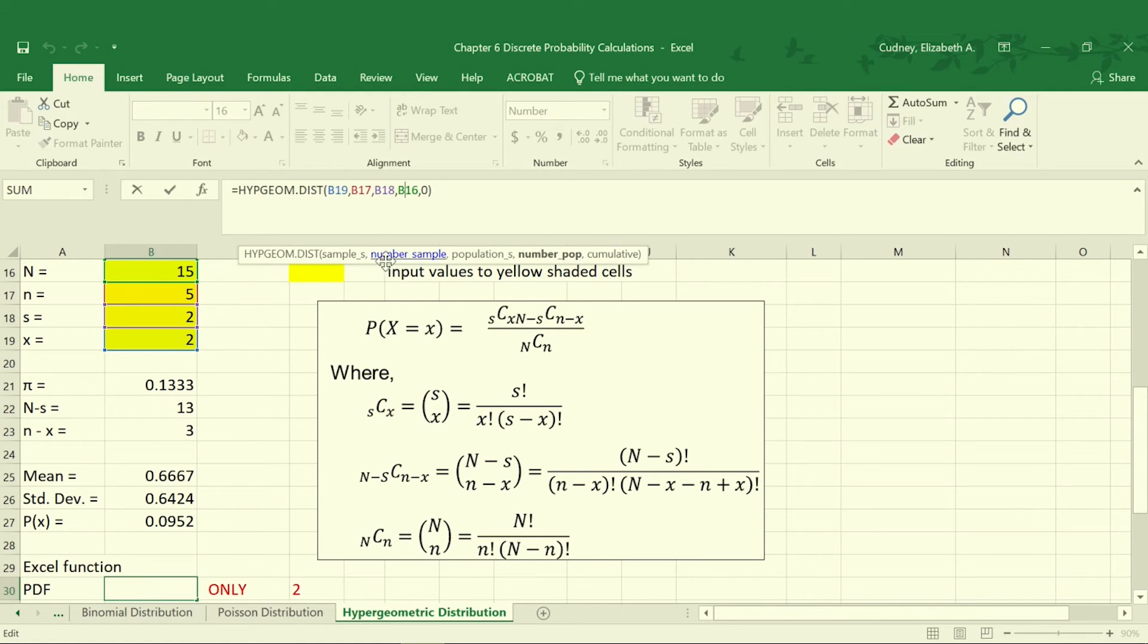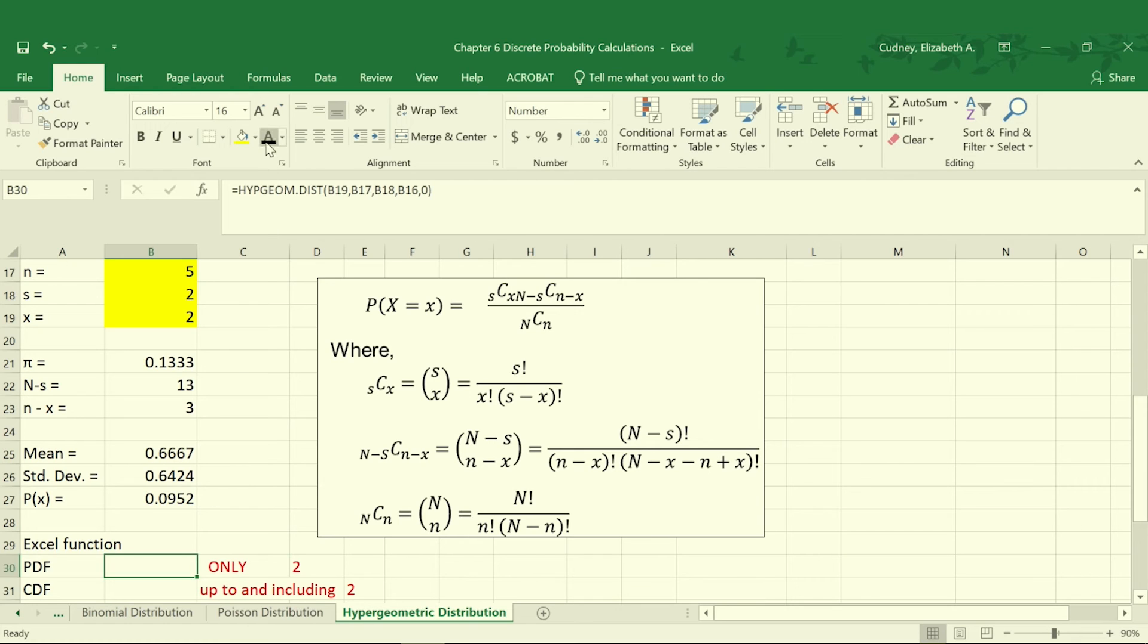And then B16 is a number in the population. So as we look at this, we start with a sample, right? We're pulling 5, we're looking for 2, and then our population is, we had 15, and we knew 2 were defective. So we're using the population information from the past, to look at what we have in that smaller sample of 5. And we're not doing cumulative yet, because we're calculating the PDF, which is why that's the 0. And here we'll get the same value that we had before, just a much simpler calculation using the Excel function. So the calculation or the probability that exactly 2 are defective is 9.52%.